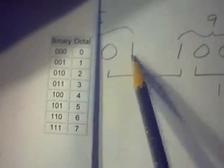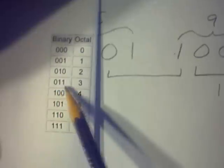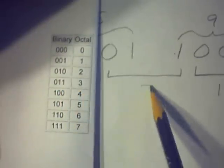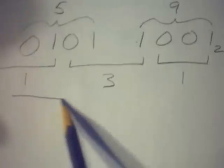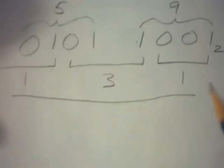And then, 0, 1, 1 corresponds to octal 3. 0, 0, 1 corresponds to 1. So, our number is going to be 131 base 8.